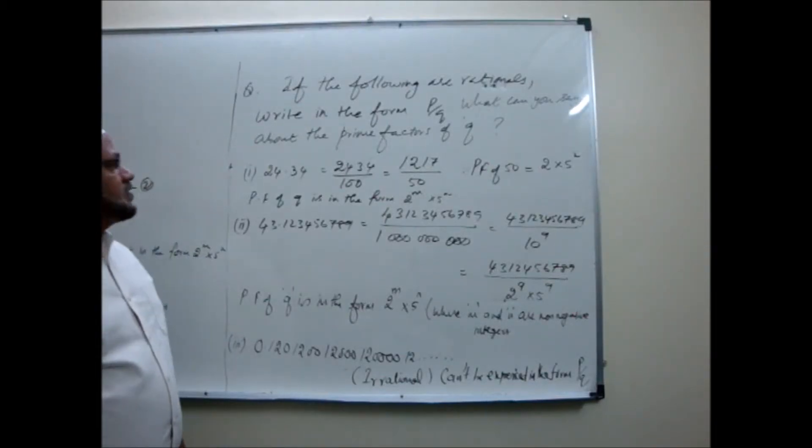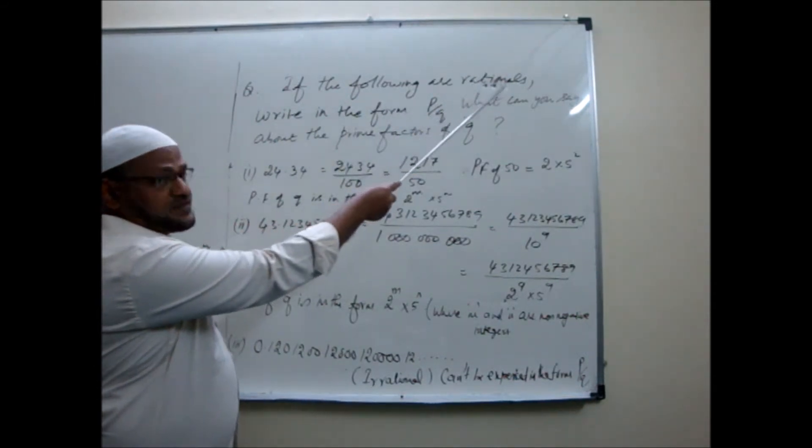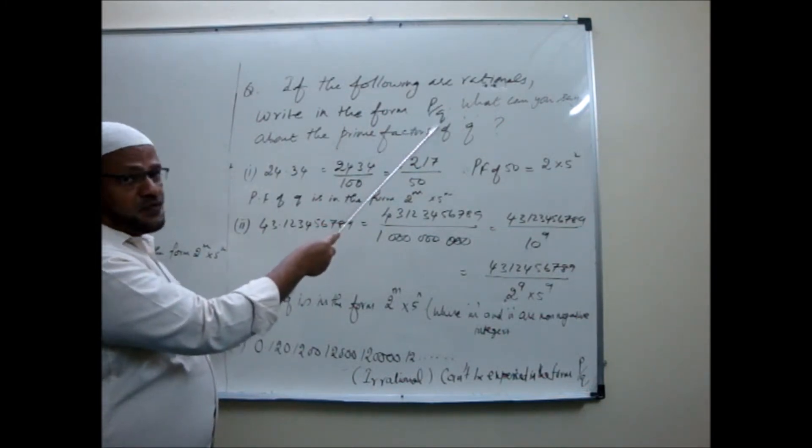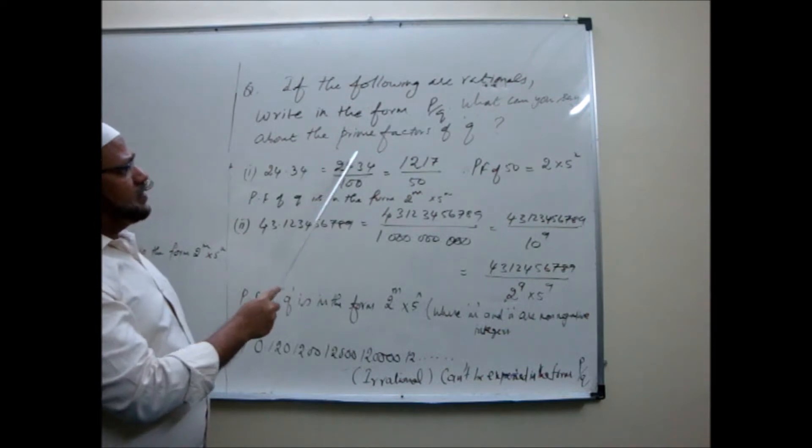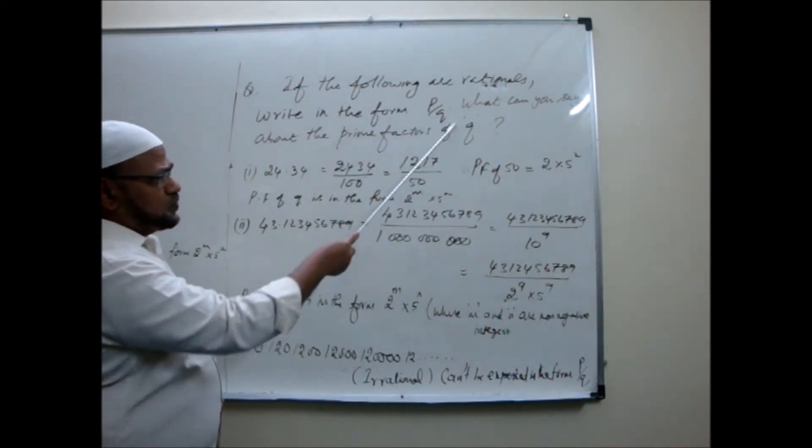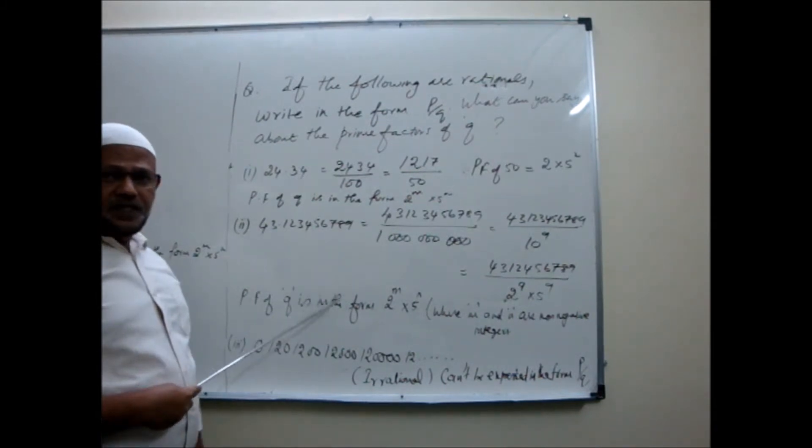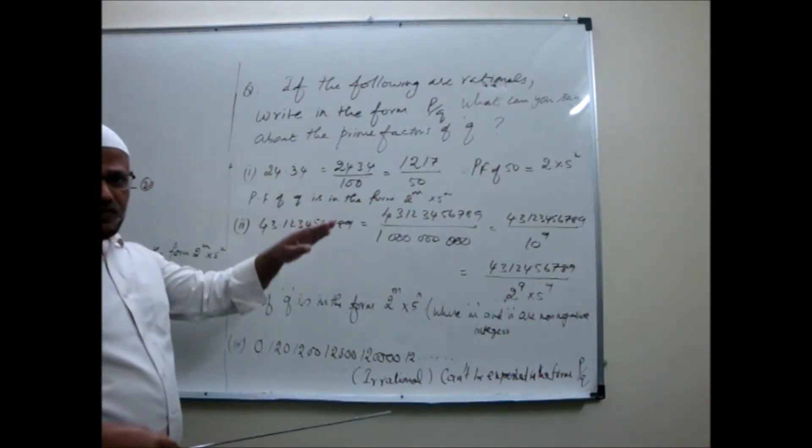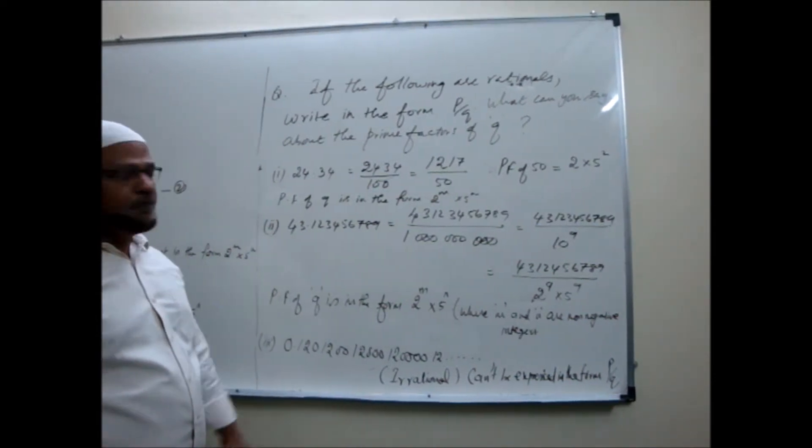Let us continue now. See this question. If the following are rational numbers, write them in the form P by Q. What can you say about the prime factors of denominator Q?